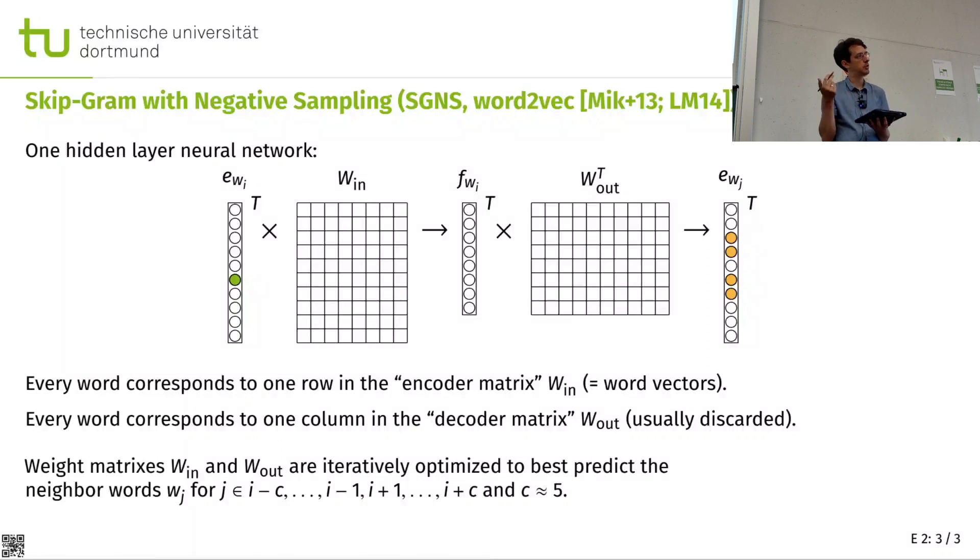Now, what they do need for this skip-gram with negative sampling is you also need to put in like punish false predictions. So if it predicts the neighbor word of boy is Obama, then that is wrong. And to train this, you not only need to train on the correct words, but you also need to train on the false words. But there are many, many more false words. And taking all of them is too expensive. So you sample the negatives. And I think you take as many negative examples that were not in the neighbors as you took positive ones to kind of balance them.